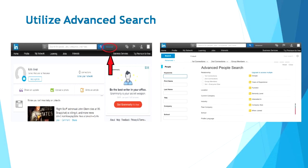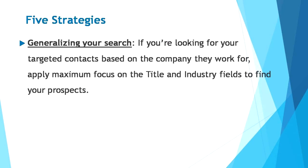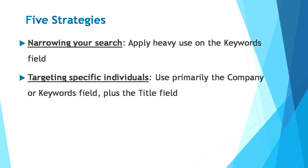Here are five strategies to help you further customize your search to reach targeted prospects. First, generalizing your search: if you're looking for targeted contacts based on the company they work for, apply maximum focus on the title and industry fields. Second, narrowing your search: apply heavy use of the keywords fields to narrow your results when you need to reach people within a specific niche of an industry. Third, targeting specific individuals: use primarily the company or keywords field plus the title field to find specific individuals in your targeted companies or industries.